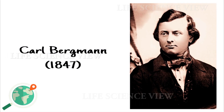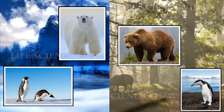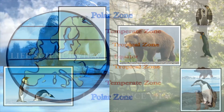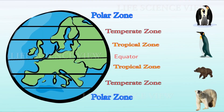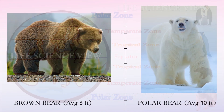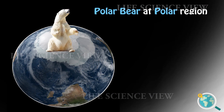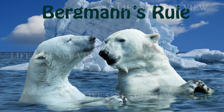Carl Bergman in 1847 noted that, among closely related mammals and birds, the largest species occurs at higher latitudes. Which means the animal species with comparatively larger body size relative to their close relative species can be seen in colder regions of the globe. This is known as Bergman's rule.